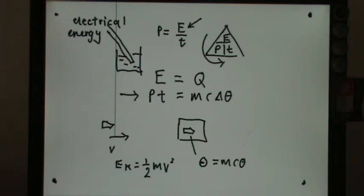Changes of theta. So you can write half mv squared equals mc theta. Same goes with,